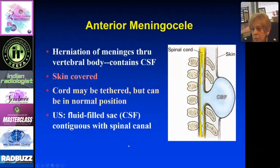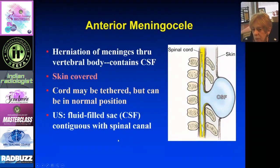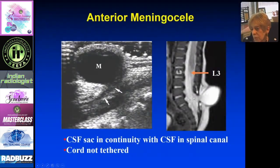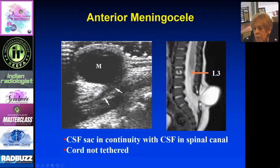The anterior meningocele is a herniation of meninges with CSF into the vertebral body. The cord may be tethered or in normal position, and it is a skin-covered lesion. On ultrasound, you see a fluid-filled sac contiguous with the spinal canal — subarachnoid fluid herniating into the soft tissues through a bony defect, covered by skin. On MRI the cord appears normal, with subarachnoid fluid going through the bony defect and covered by skin. All of these lesions — the myelocystocele, the anterior meningocele — are skin-covered with bony defects through which spinal contents protrude.